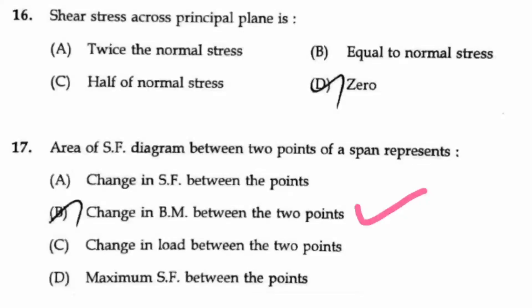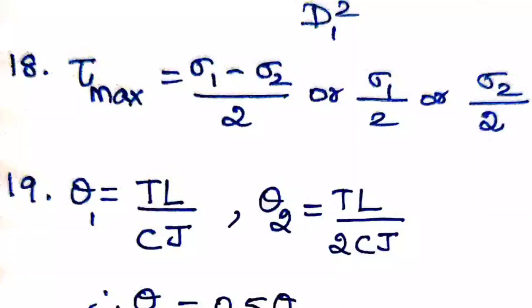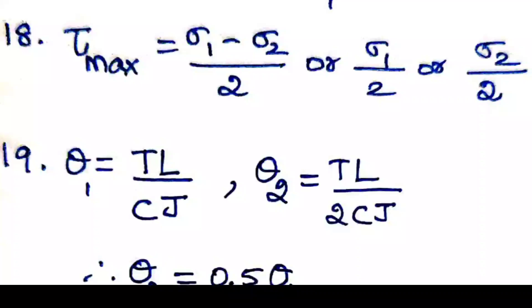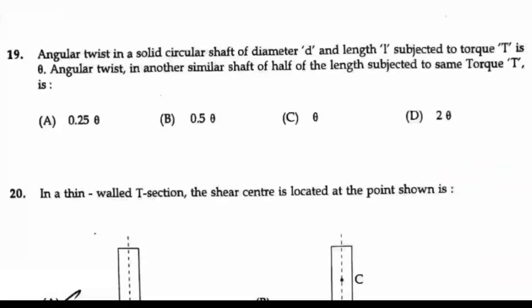Question 18: The maximum shear stress is equal to half of the difference of the principal stress. So τ_max = (σ₁ - σ₂)/2, where both are the maximum principal stress and minor principal stress. It can also be sometimes σ₁/2 or σ₂/2 alone. Generally, we express it as the difference between the stresses divided by 2. The answer is half of the difference of the principal stress, so option C is your answer.